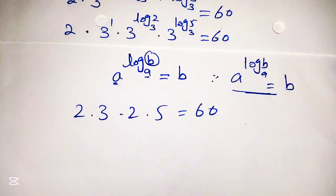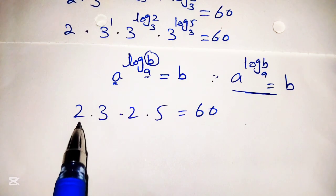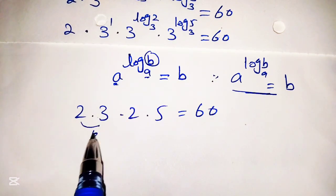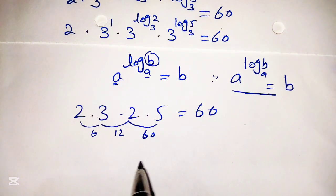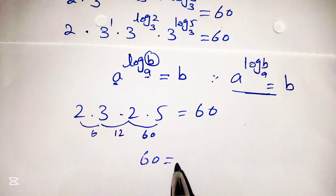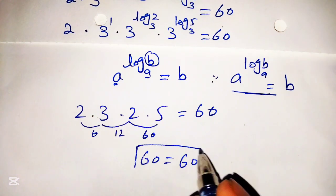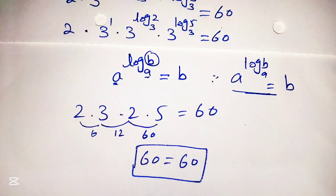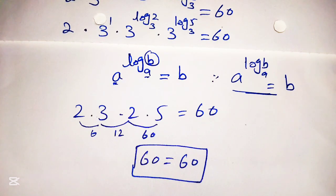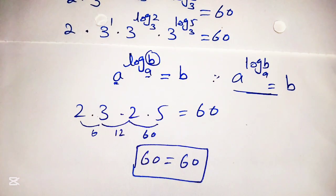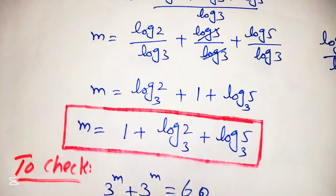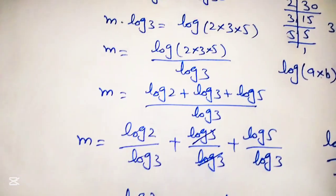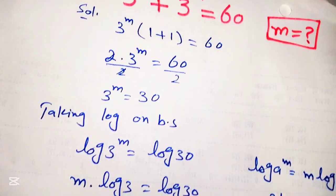Simplifying: 2 into 3 is 6, 6 into 2 is 12, and 12 into 5 is equal to 60. So 60 is equal to 60 — the left hand side equals the right hand side, and the solution is verified. Thank you so much for watching this video. Please subscribe to my channel for more interesting videos, and if you have any other easy solution for this question, please share it in the comment section.